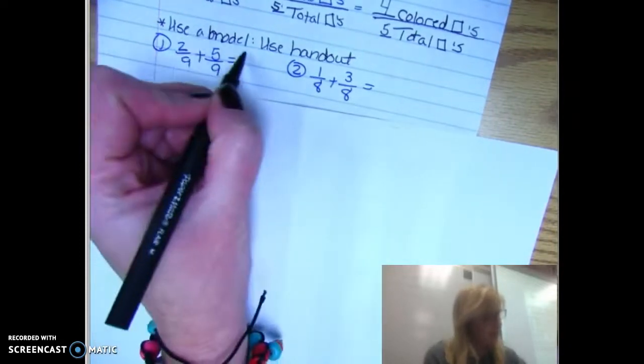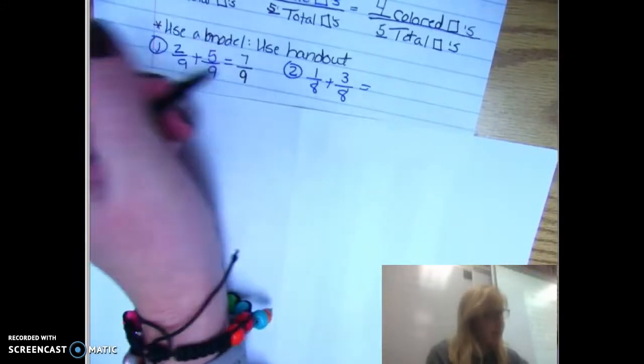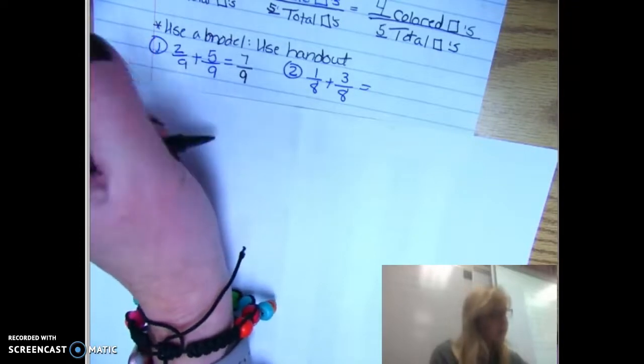So in this case, I would do two plus five is seven and the ninth stay the same. That's out of how many total and the total stays the same.